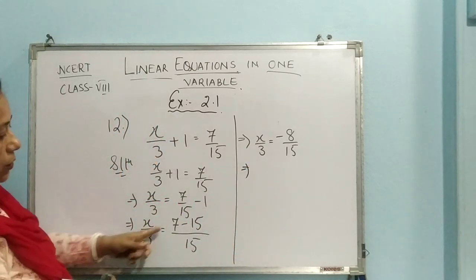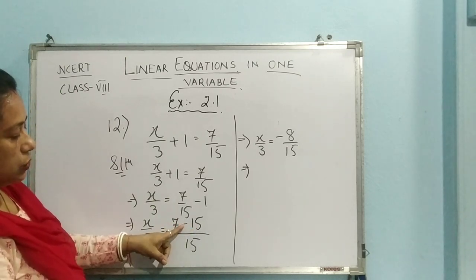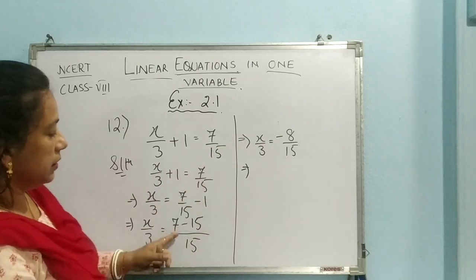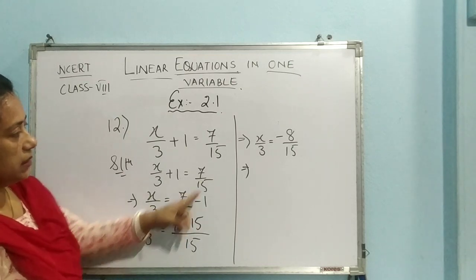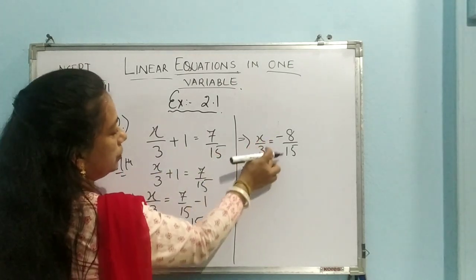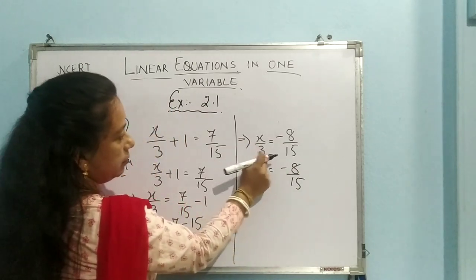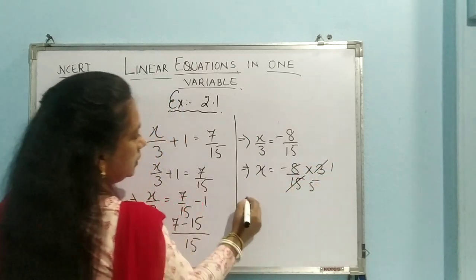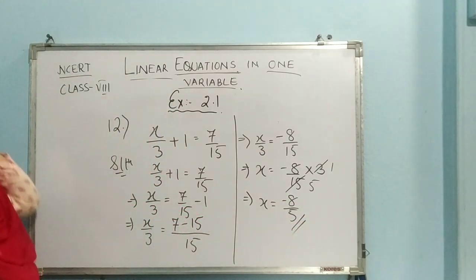Why minus 8? Because 7 minus 15 means one of the numbers is having negative sign. So we will ultimately subtract the numbers. So 15 minus 7 is 8. But in the answer, the sign of the greater number will be there. So out of 15 and 7, 15 is the greater one. So its sign is minus. That's why it will be minus. Now, 3 is extra there. We need to find out the value of x. So minus 8 by 15 since it is divided by. So it will go to the upper part. If it goes to that side. 3, 1's are 3. 3, 5's are 15. So we are left with x is equal to minus 8 by 5. So this is done. So minus 8 by 5.